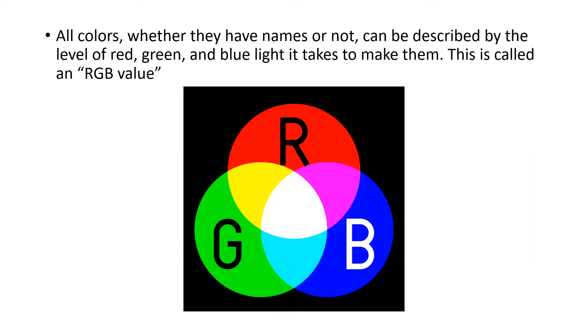All colors, whether they have names or not, can be described by the level of red, green, and blue light it takes to make them. This is called an RGB value.